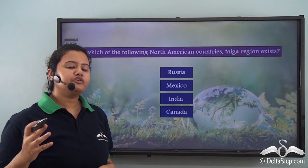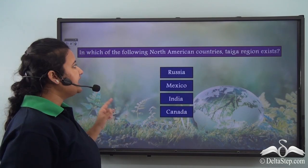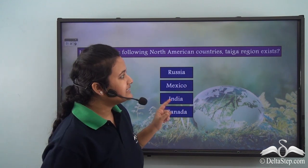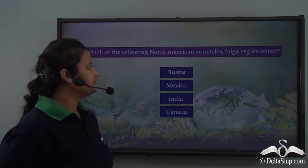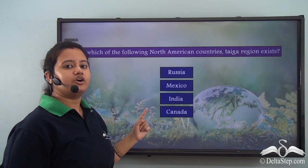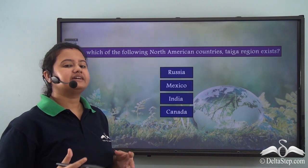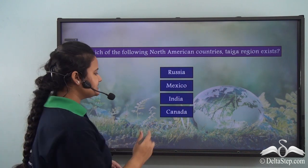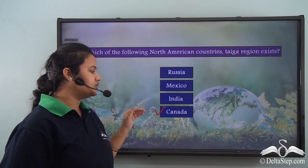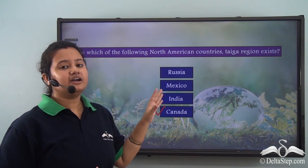Before we proceed, here is a question: in which of the following North American countries does the Taiga region exist — Russia, Mexico, India, or Canada? The correct answer is Canada. Canada is a North American country and it contains the Taiga region.